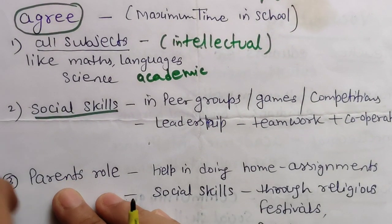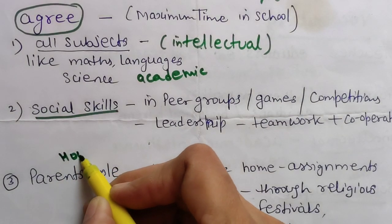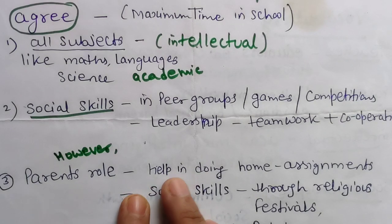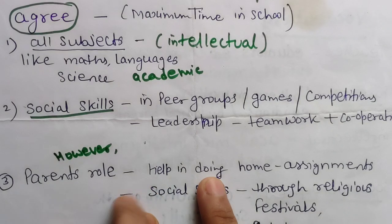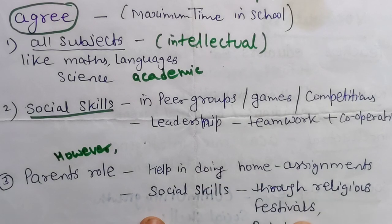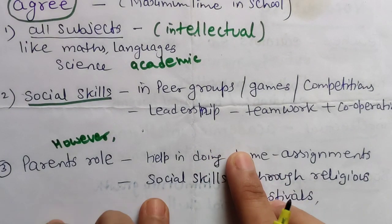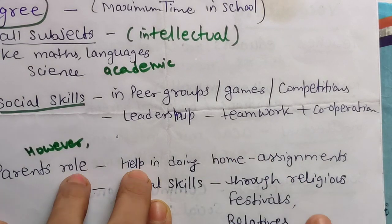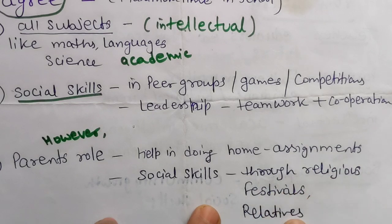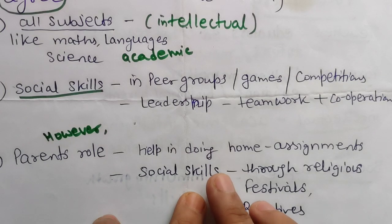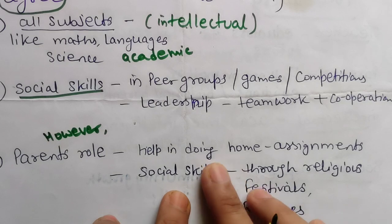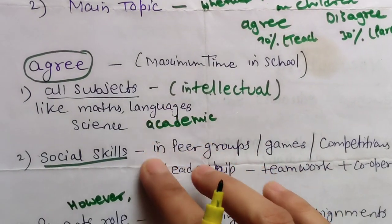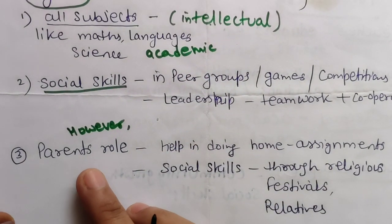For the third paragraph, I will talk about parents' role by saying 'however, we cannot ignore parents' role in a child's life.' After school, parents help with homework, home projects, and holiday assignments — so they also help with intellectual knowledge. For social skills, parents teach through religious ceremonies, festivals, relatives' gatherings, and marriages. Children are always observing and learning from parents too, so we can't ignore that.